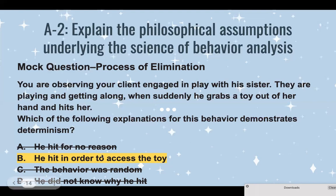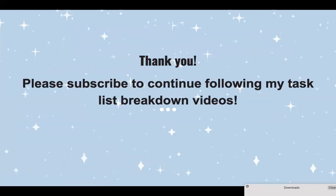In order for us to actually know that, of course, we would need to conduct an FBA or an FA. With this example, I'm just looking at what could be an explanation that aligns with determinism. I hope that question and that breakdown of A-2 helps. Let me know if you have any questions or clarification needed for any of these concepts — there were quite a few in this topic A-2.